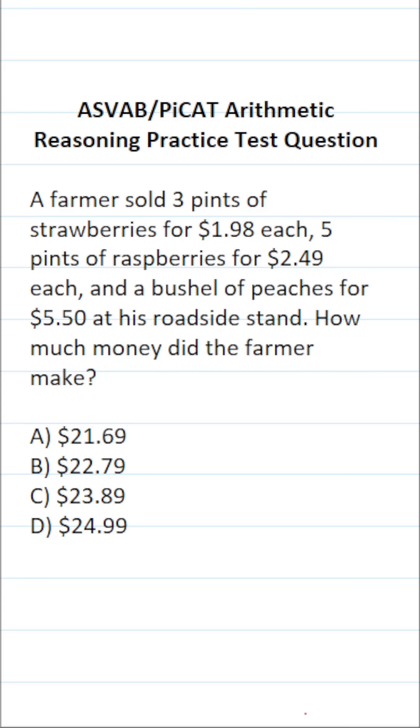So to determine that, we're going to do $1.98 times three to find out how much money he made selling his strawberries, $2.49 times five to determine how much money he made selling his raspberries, and he only sold one bushel of peaches, so that's going to be $5.50. Let's work this out. Once we work this out, we'll add it all together and get our total.